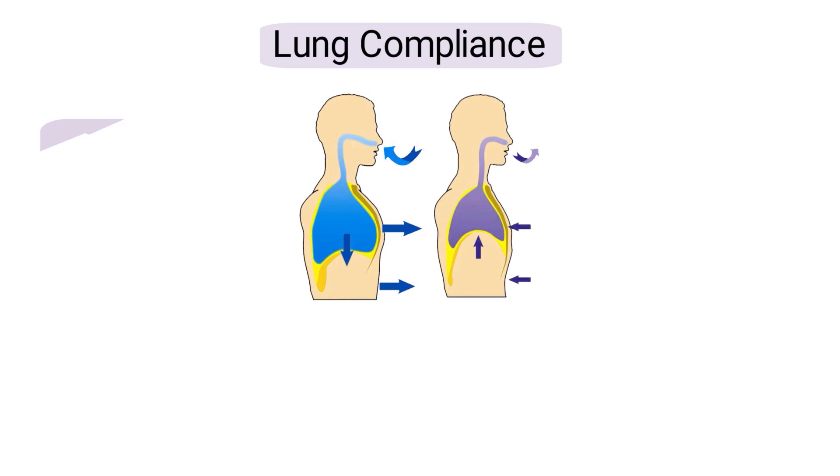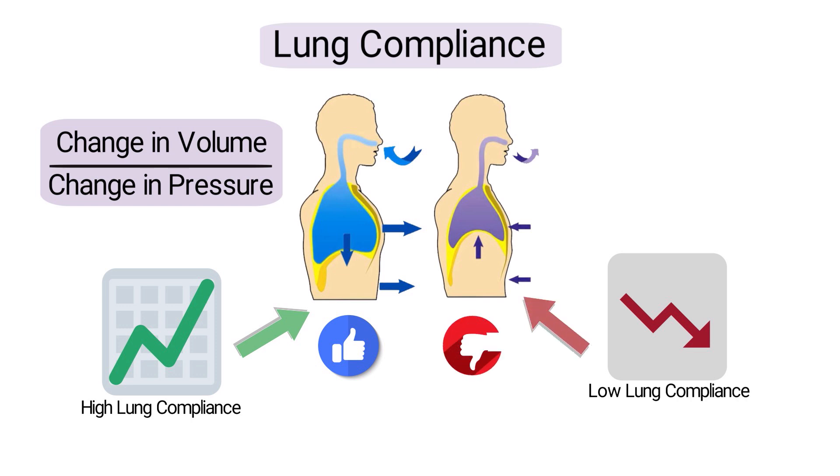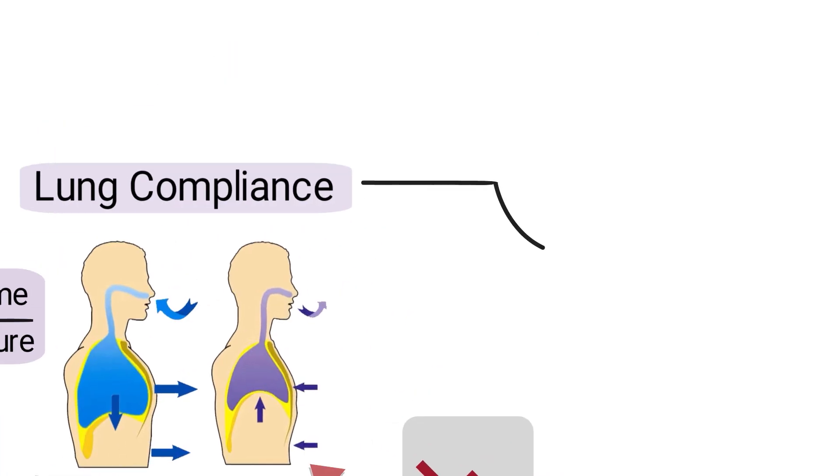Now let's talk about lung compliance. Lung compliance is a measurement of the lungs' ability to expand and contract. It is calculated by dividing the change in volume by the change in pressure. High lung compliance means that the lungs can expand more easily, while low lung compliance indicates lung stiffness. There are two primary types of lung compliance: static and dynamic.